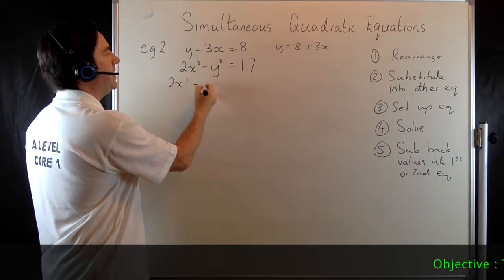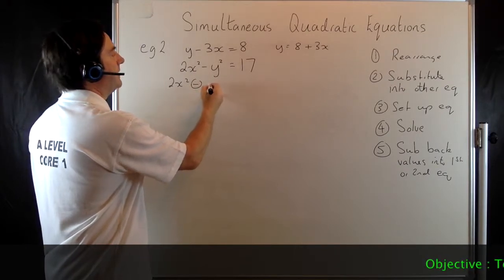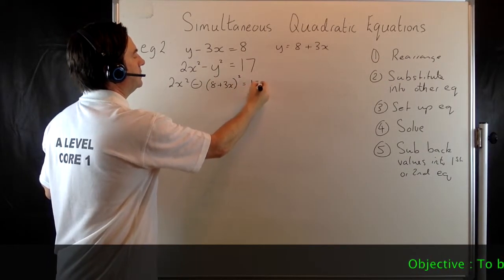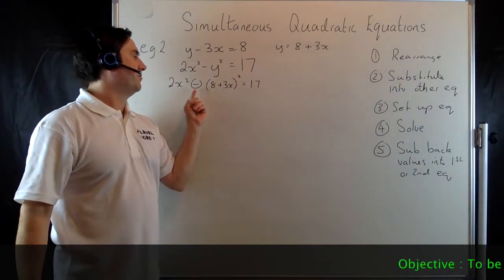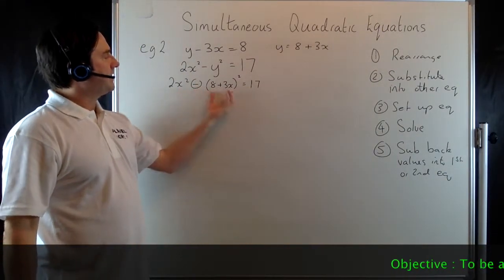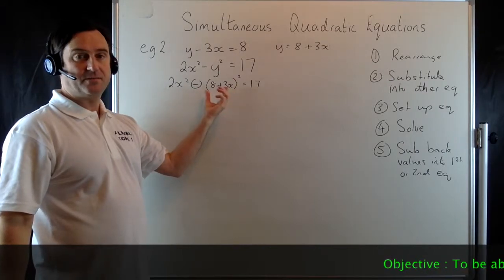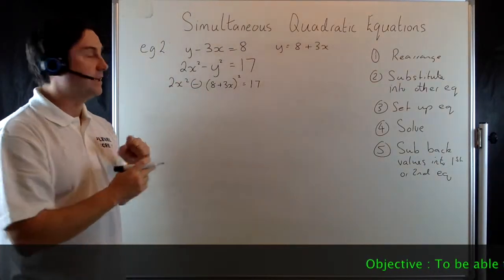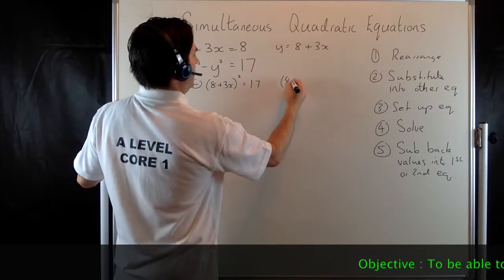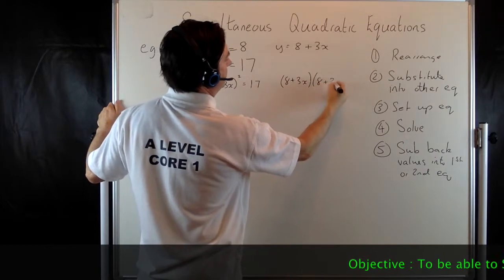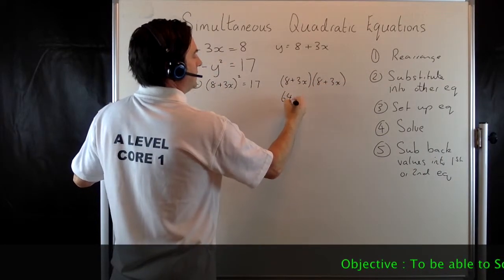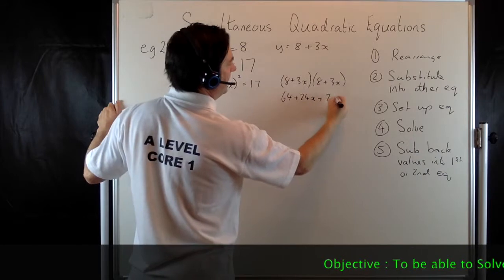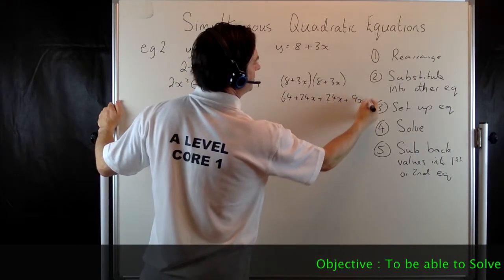So we get 2x squared minus, and I'm going to put a circle around that to remind me I need to take away the whole expression 8 plus 3x once I've expanded it — that's going to be squared — equals 17. So let's expand it: 8 plus 3x times 8 plus 3x gives us 64 plus 24x plus another 24x plus 9x squared. Simplifying the 24x terms, I get 64 plus 48x plus 9x squared. This expression now replaces the 8 plus 3x squared.